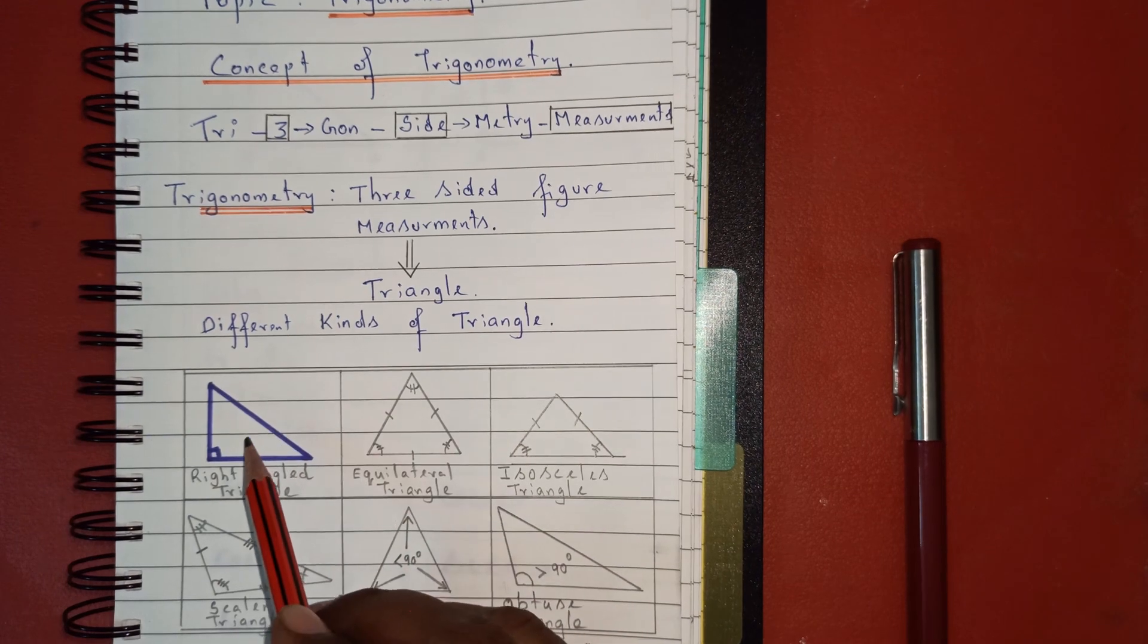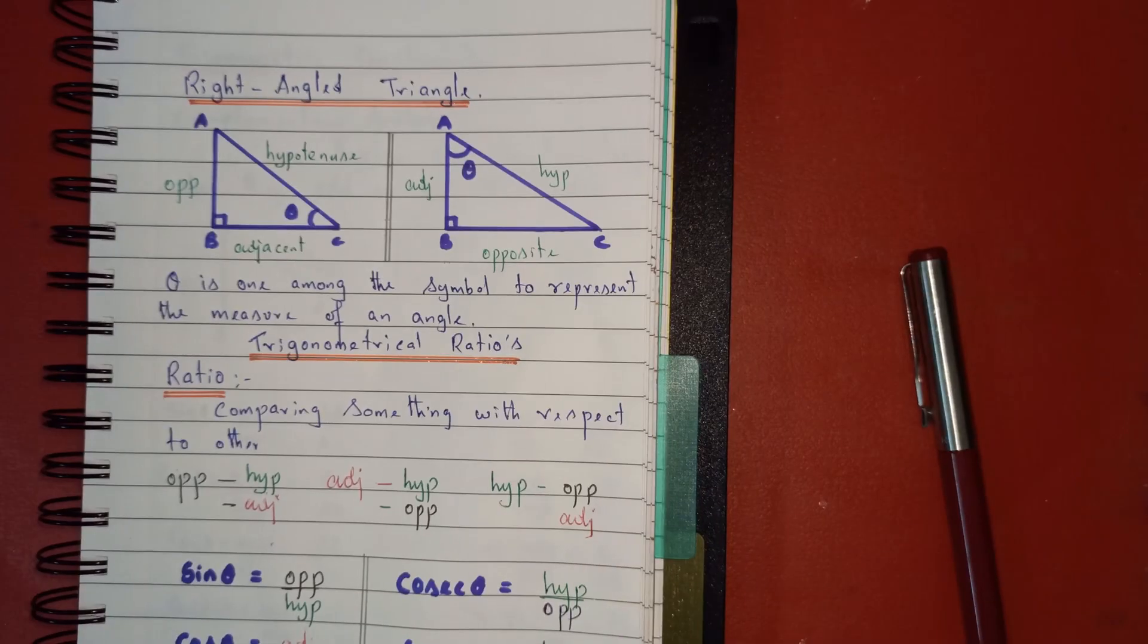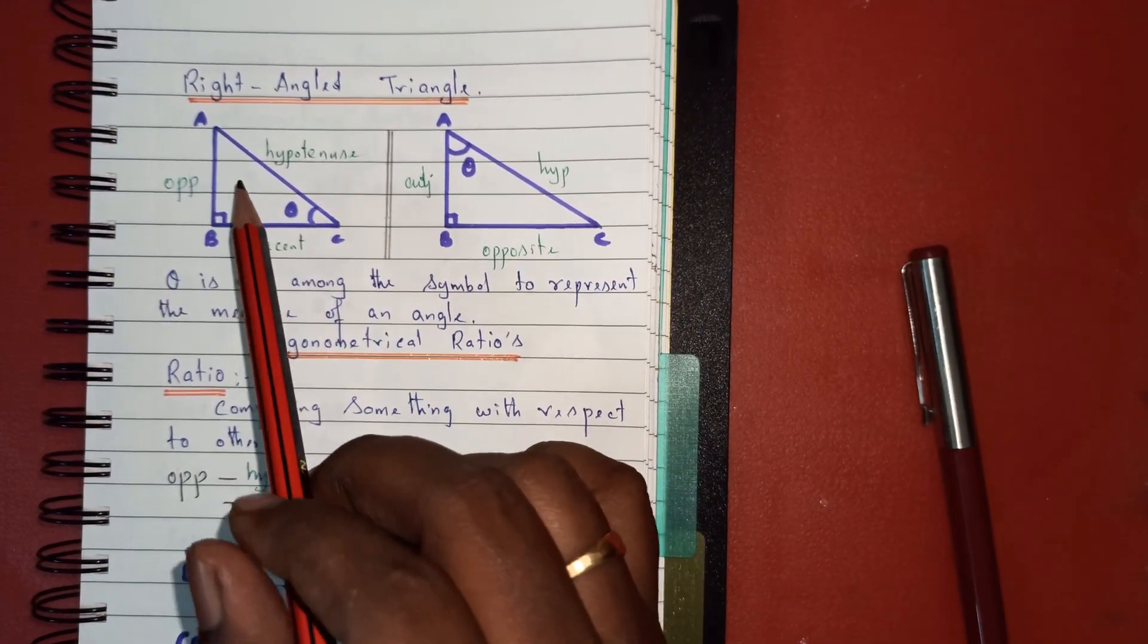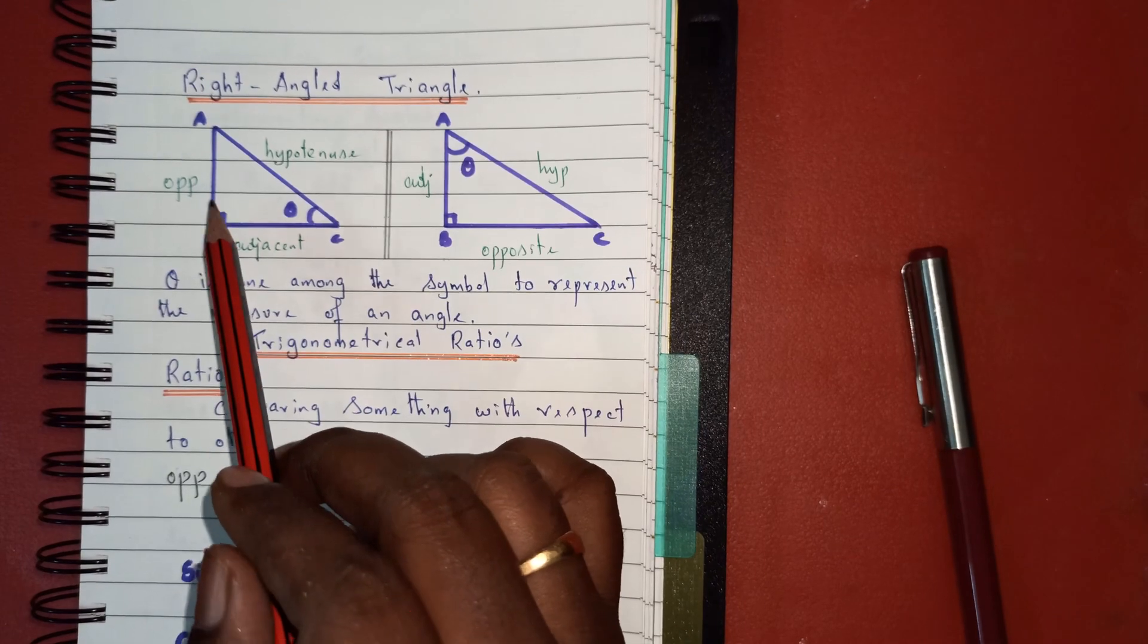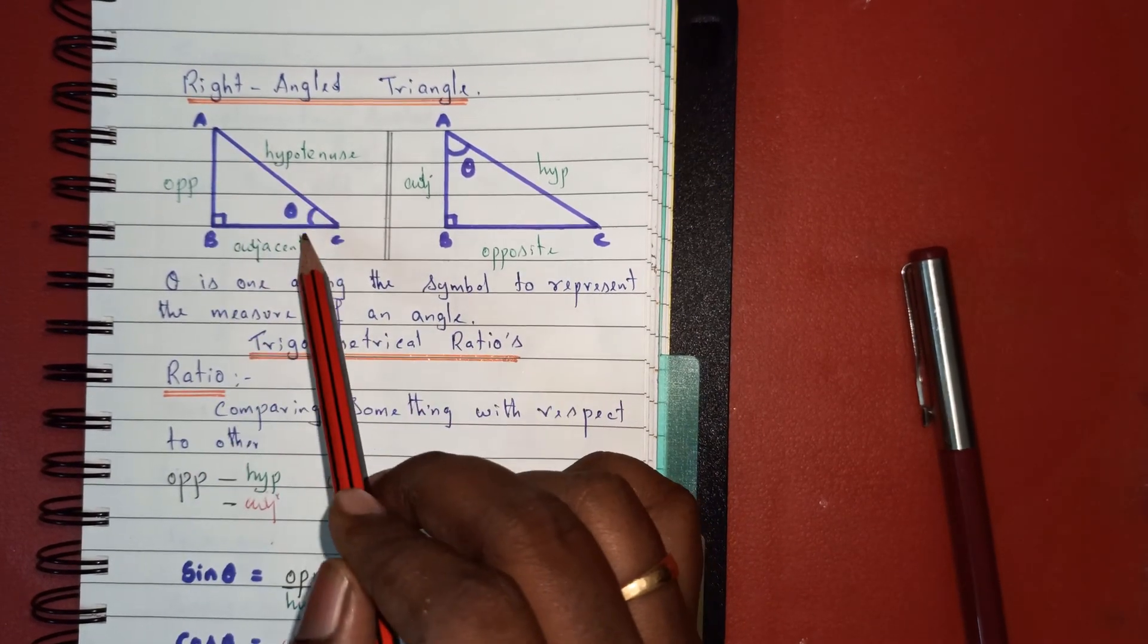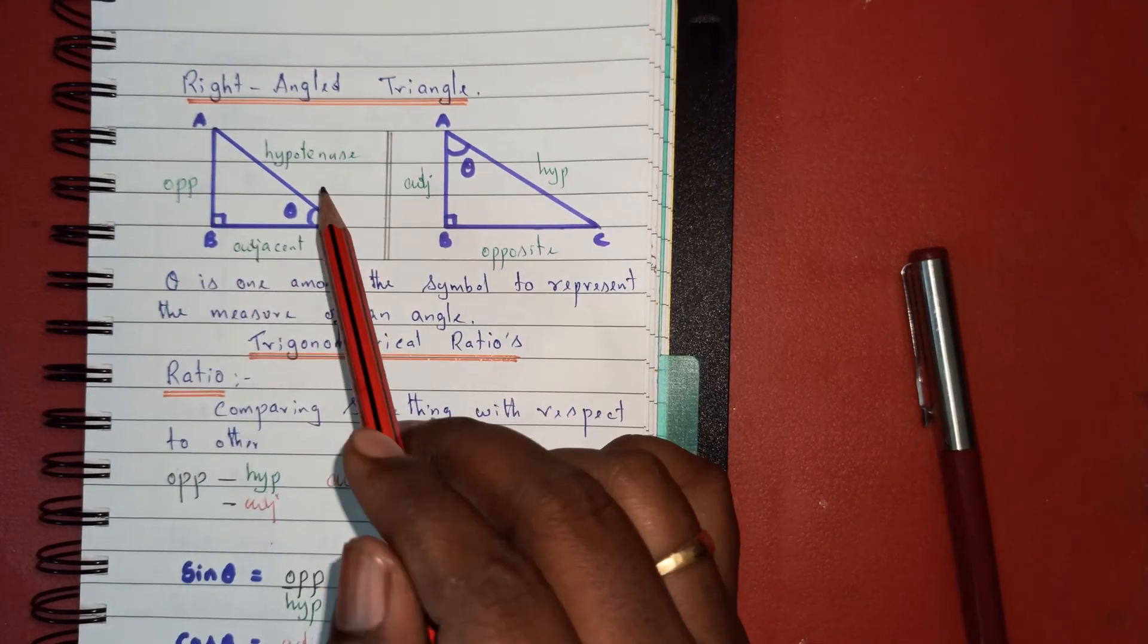So I have taken a right angle triangle ABC. This is 90 degrees. You can fix your angle at A or at C. In this figure, I've placed my angle at C.